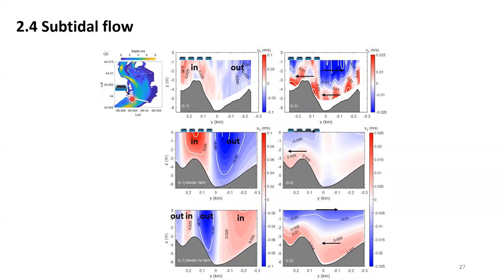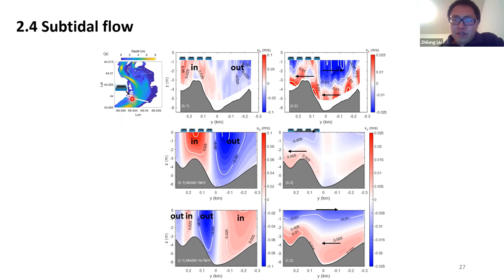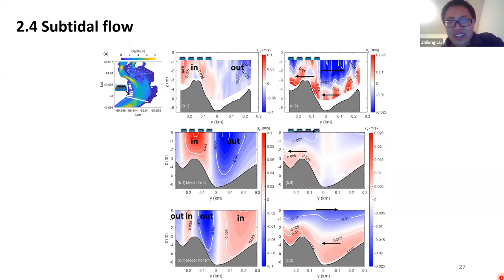Quick question along the same lines: is it safe to say the main effect of the surface farm is to add friction to the surface, which ends up reducing tidal straining? Yes, you can say that — it acts as a forcing on the surface. Based on this analytical model, we can also put particles or concentration into the model to see the distribution along the farm. There are lots of results related to that which we couldn't show today.